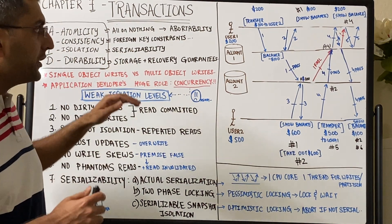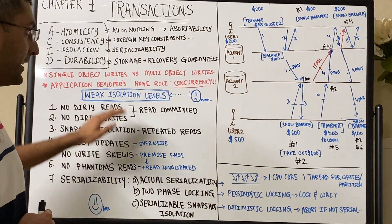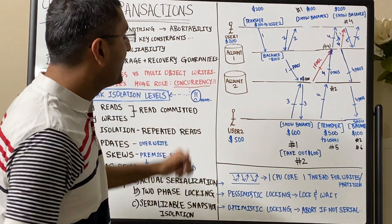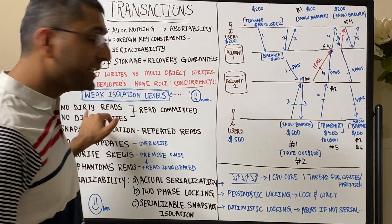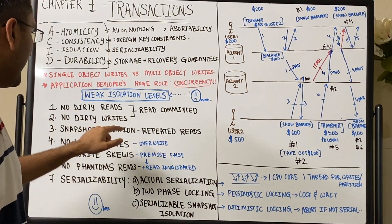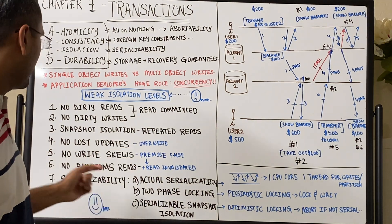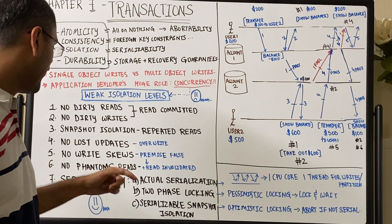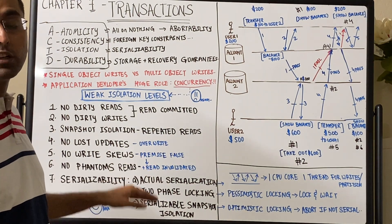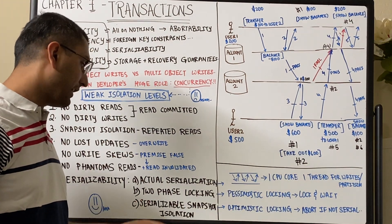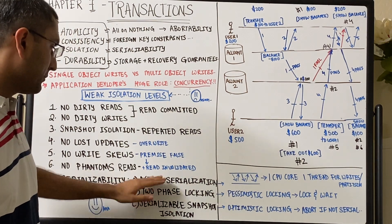We will understand some of these properties and various levels of isolation through examples. The things we're going to learn about are: dirty reads, dirty writes, snapshot isolation for repeated reads, no lost updates, no write skews, no phantom reads — and how we provide all that with actual serialization, two-phase locking, and serializable snapshot isolation.